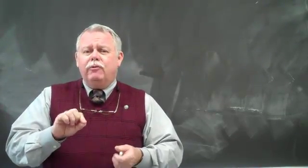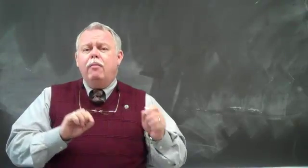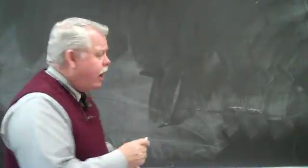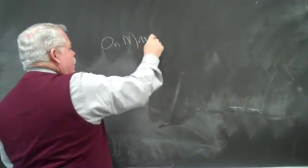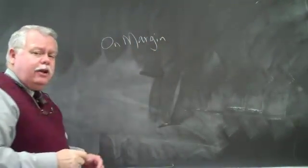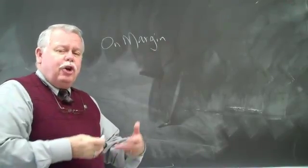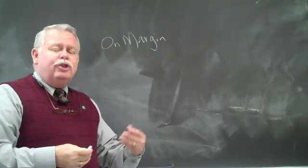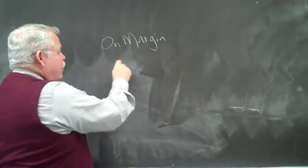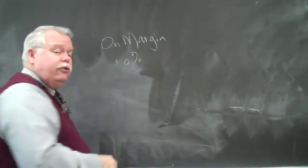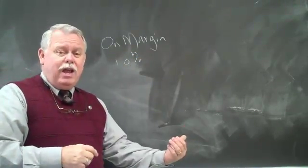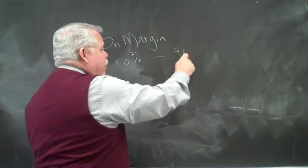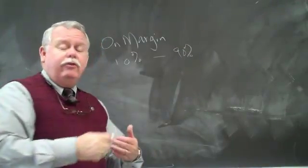At that time, it was possible to buy stock on margin. What we mean by on margin is that the person wanting to buy stock could go to his or her stock broker and they could put 10% of the purchase price down as a down payment and borrow the other 90% of the price of the stock.